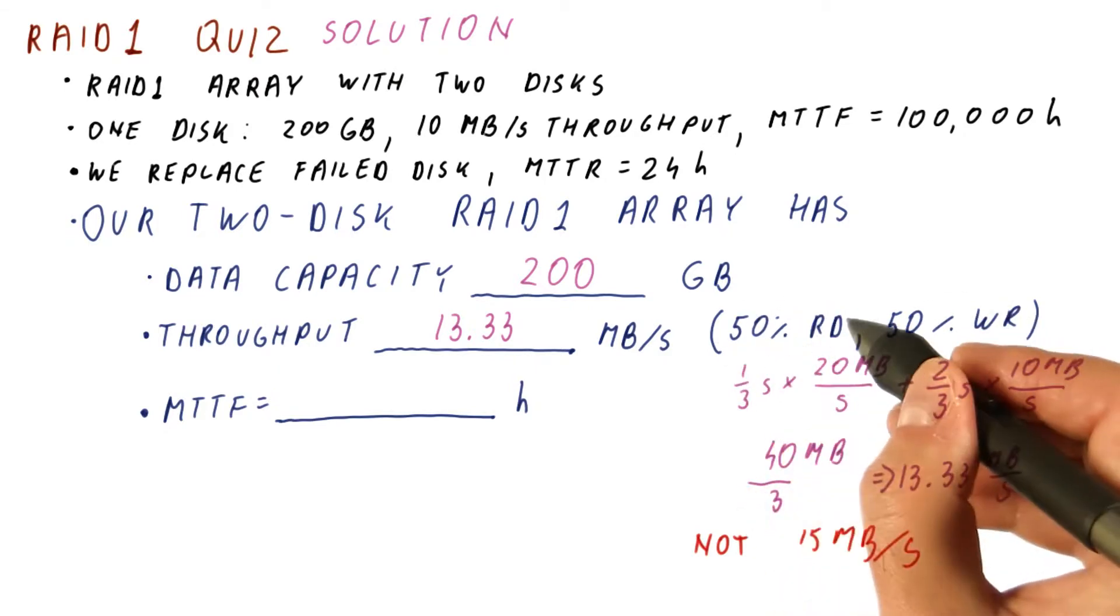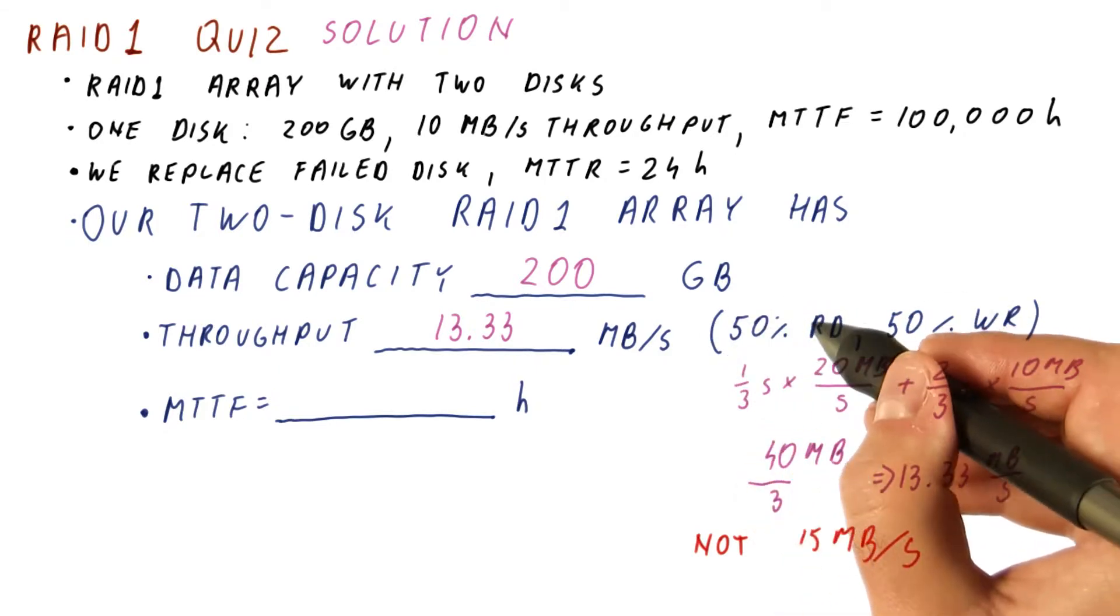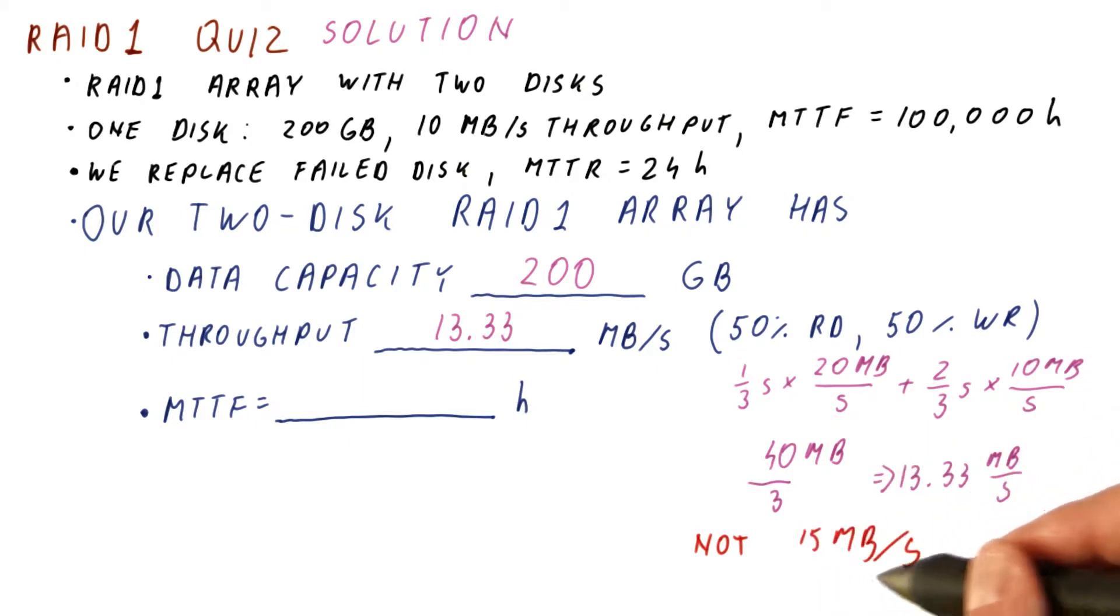Reads are faster, thus we spend less time on them. Which is why, again, the throughput is not 15 megabytes per second.